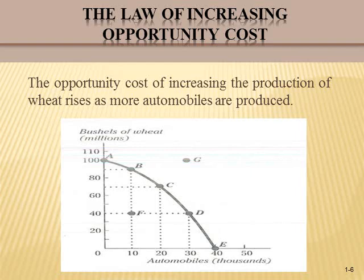As we can see, the opportunity cost of an additional 10,000 automobiles moving from A to B to C to D to E goes from 10 million to 20 million to 30 million to 40 million — the numbers are increasing. So we can say the opportunity cost of increasing the production of automobiles rises as more automobiles are produced, meaning the PPF is demonstrating the law of increasing opportunity cost.